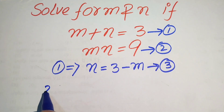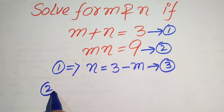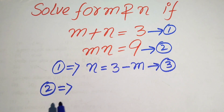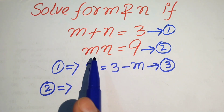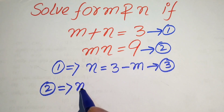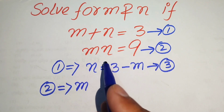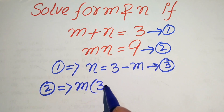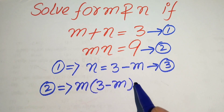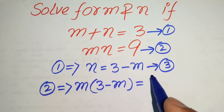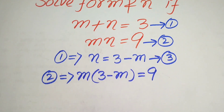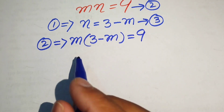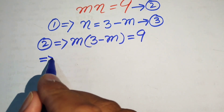Now we substitute this value of n into equation number two. After substituting, equation two becomes m times (3 minus m) equals 9.